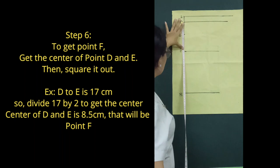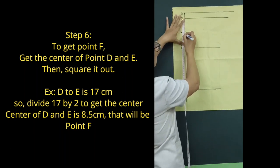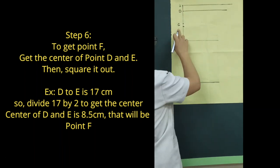Step 6: To get point F, get the center of point D and E. Then square it out.